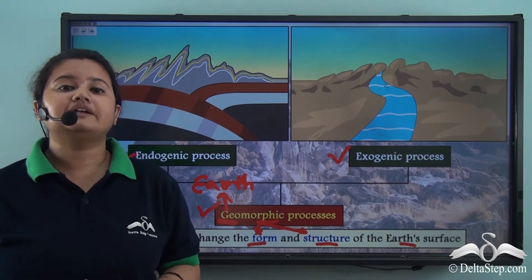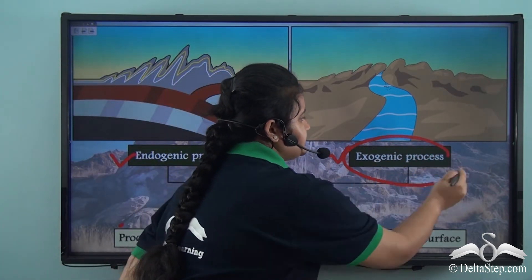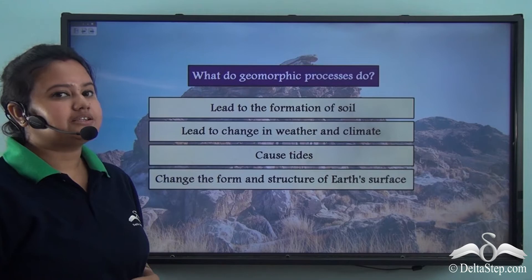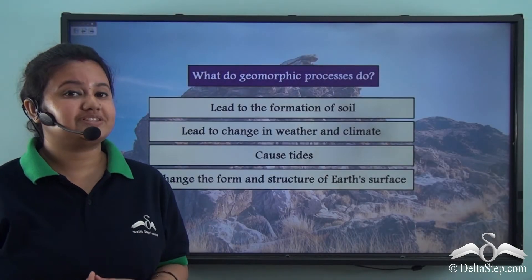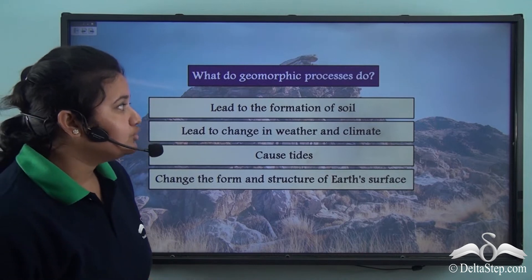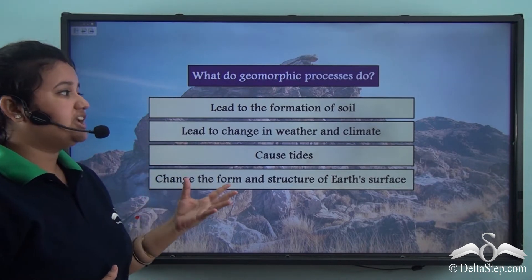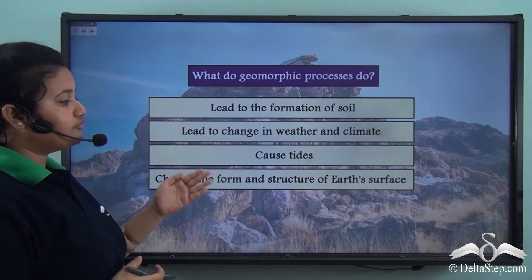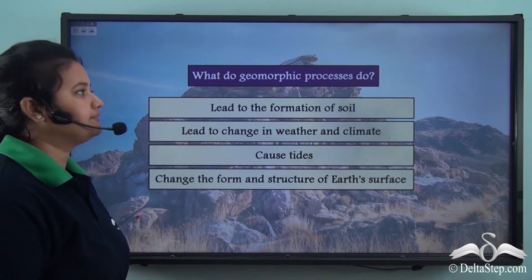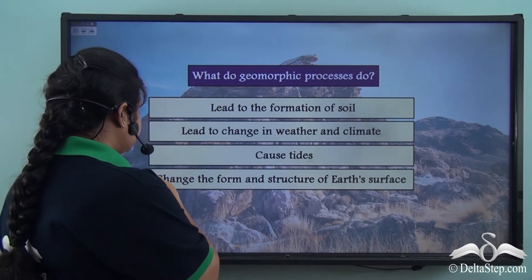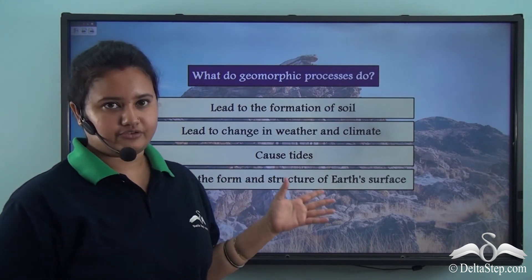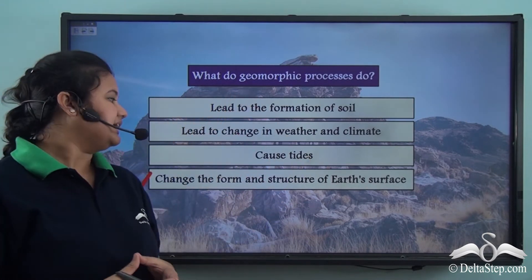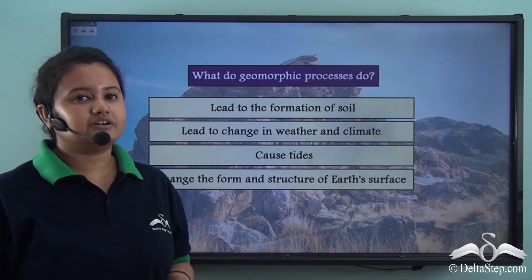In this video, we will discuss exogenic processes in detail. Before we move on, let us try to answer this question: what do geomorphic processes do? They lead to formation of soil, lead to change in weather and climate, cause tides, or change the form and structure of the Earth's surface? The correct answer is: they change the form and structure of the Earth's surface, because geomorphic processes are the processes that change the form and structure of the Earth's surface.